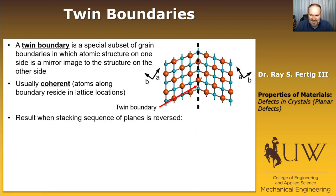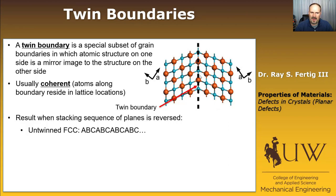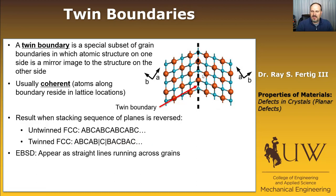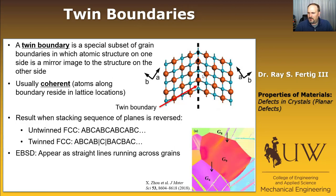Twin boundaries result when the stacking sequence of the planes is reversed. In untwinned FCC, the stacking sequence is ABCABCABC. If we twin it, after ABCABC the next plane would normally be A, but instead it becomes B, and we reverse the order to BAC BAC — which is what you see in the diagram. In EBSD (electron backscatter diffraction), twins appear as straight lines running across grains, as visible in the image shown.